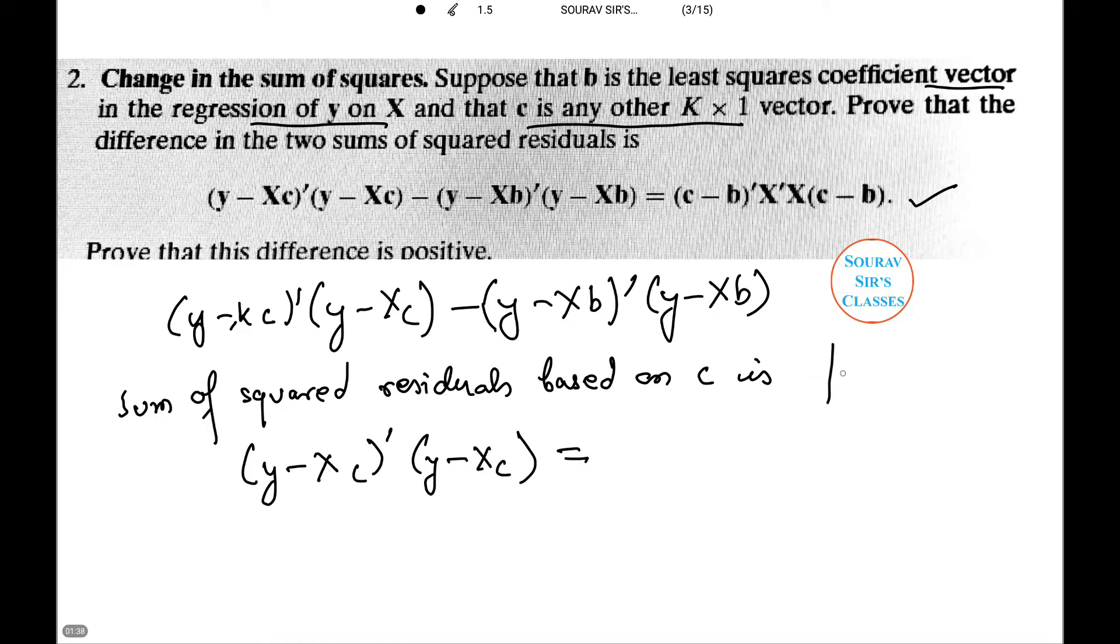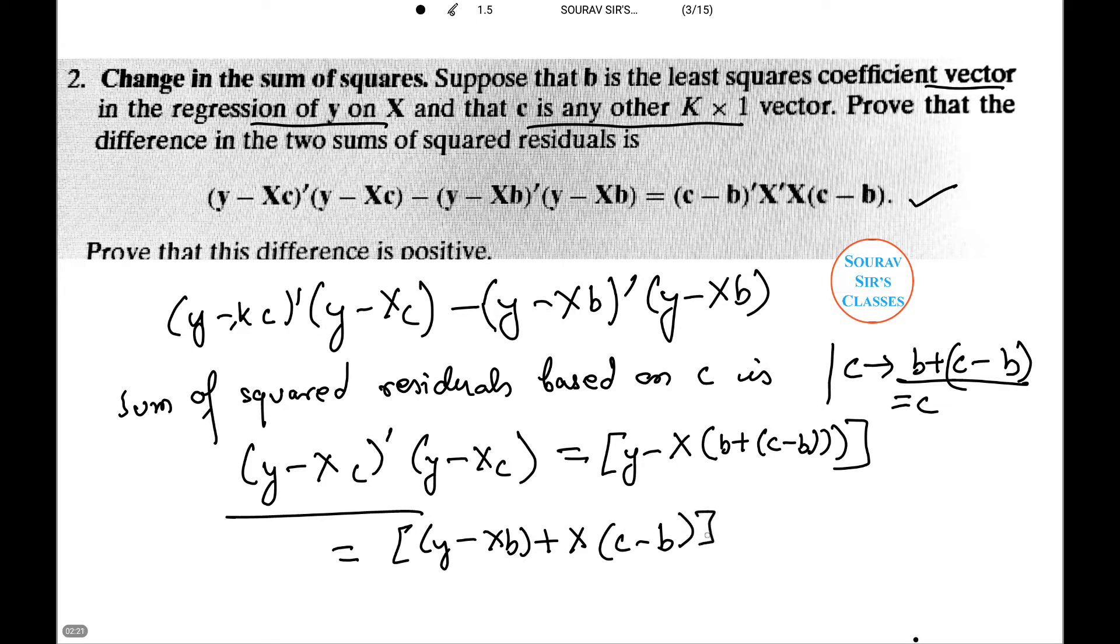We also do a little trick out here so that our work becomes a bit easy. Let us write c as b plus (c minus b). Note it is actually equal to c but we are going to break it and introduce b in this equation. So this equation looks like (y - X) into [b + (c - b)], and that is equal to (y - Xb) + X(c - b) whole transpose.